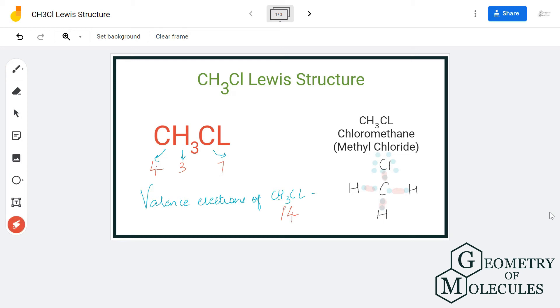Now let's see if the octets of all the atoms are fulfilled. Hydrogen has two valence electrons, chlorine has eight valence electrons, and even carbon has eight valence electrons as it has shared four of its electrons with three hydrogen atoms and one chlorine atom.